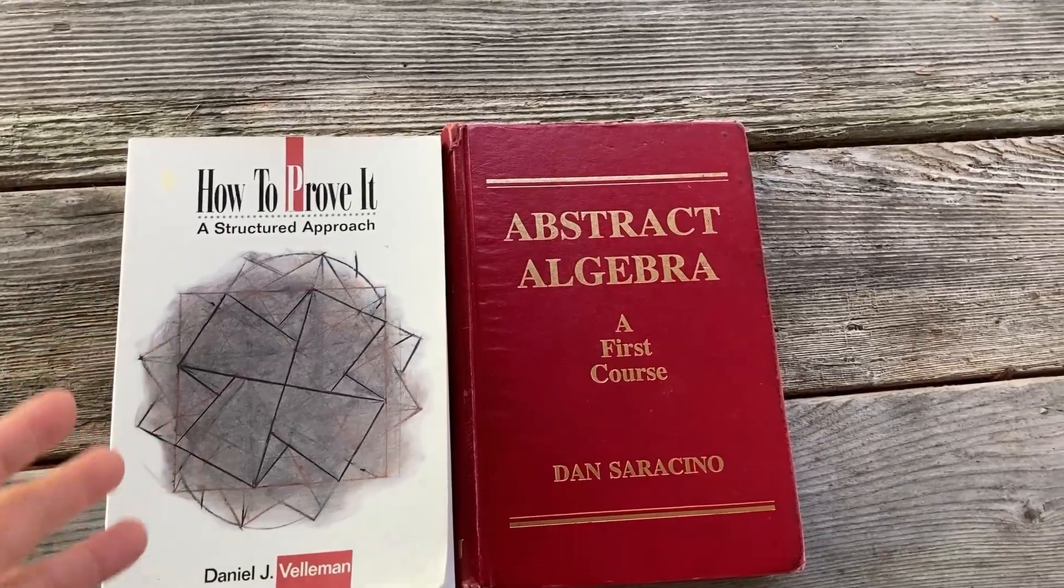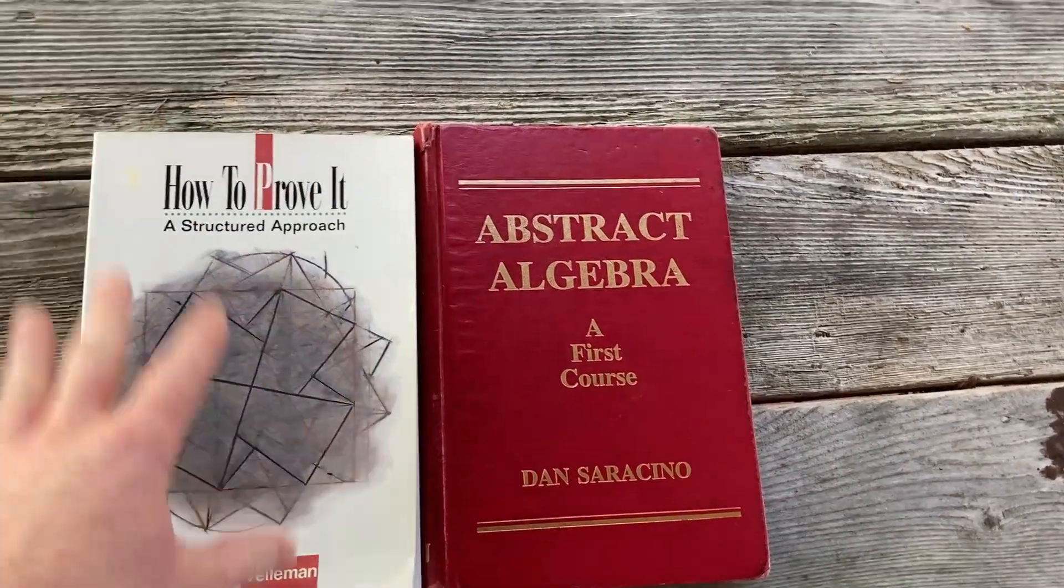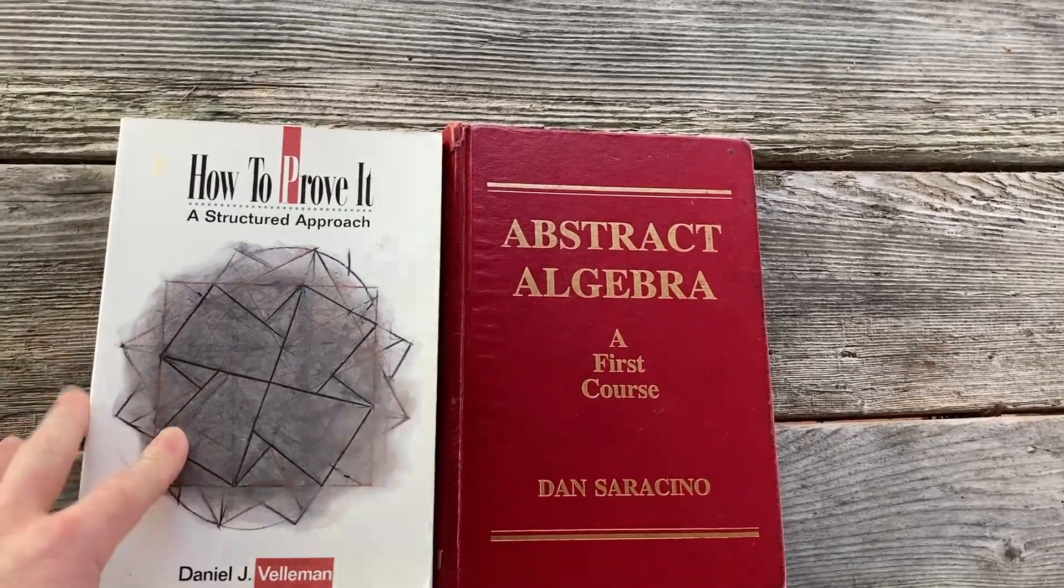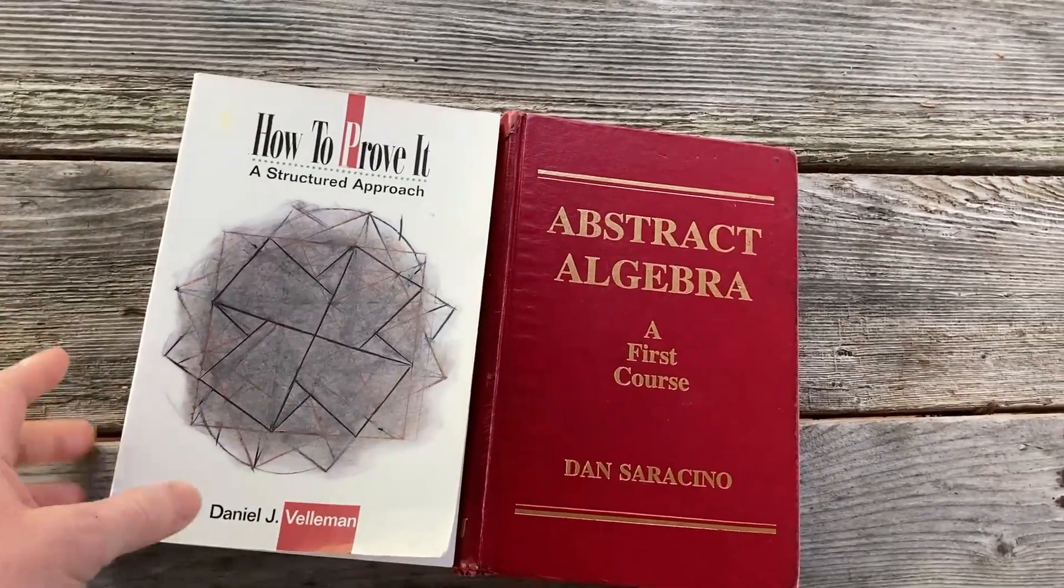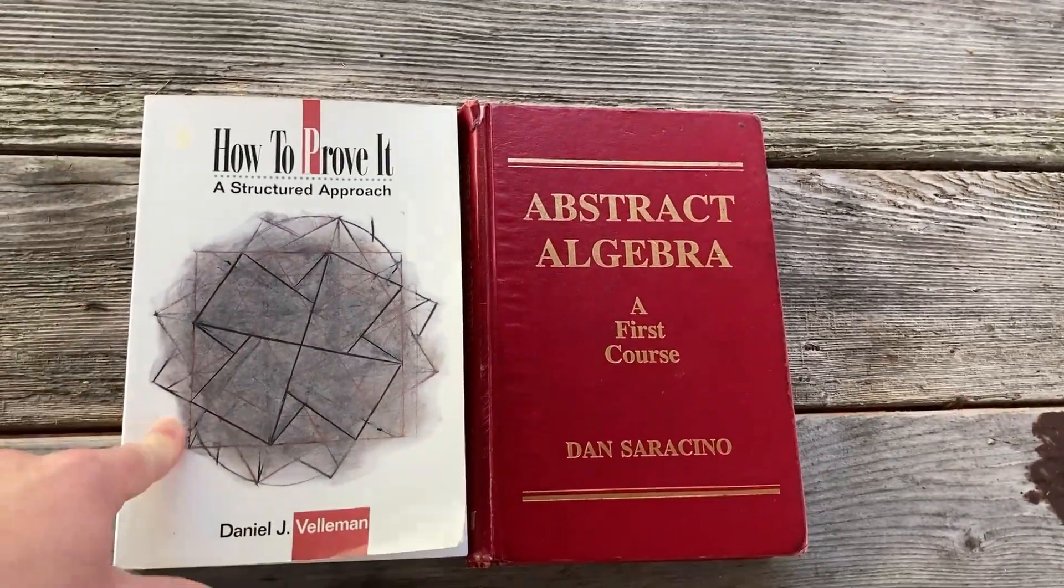Well, there you have it. That's how you can learn abstract algebra. Just get a really good book like this one and just start reading it and working through it. Obviously, knowing how to write proofs is a prereq. So you definitely want to get a book on proof writing. I definitely recommend this one. I'll leave links in the description of this video to both of these.